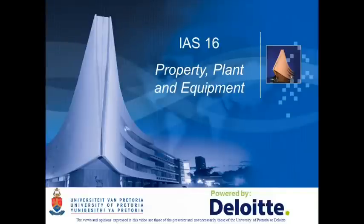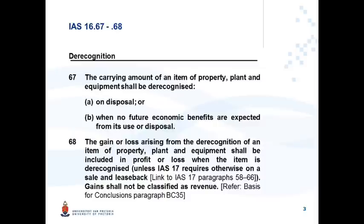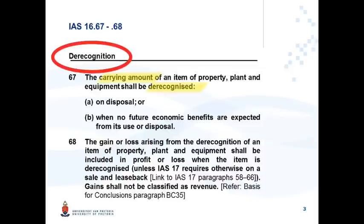IAS 16 property, plant and equipment — derecognition and compensation from third parties. IAS 16 paragraph 67 to 68 deals with derecognition. The carrying amount of an item of PPE shall be derecognized on disposal or when no future economic benefits are expected from its use or disposal. The gain or loss arising from the derecognition shall be included in profit or loss when the item is derecognized.